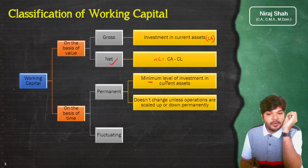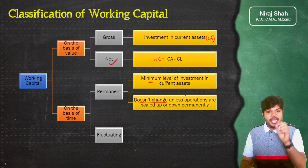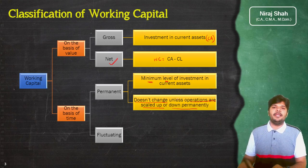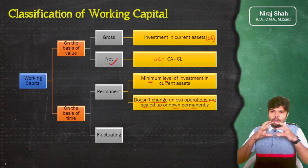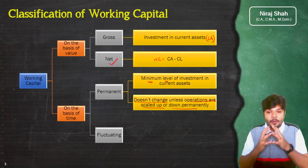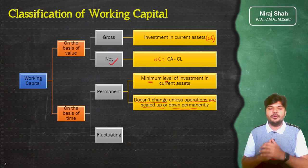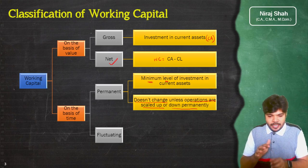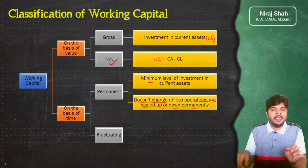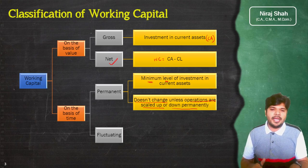Permanent working capital change नहीं होती — permanent working capital doesn't change unless operations of the business are scaled up or scaled down permanently। अगर अचानक business के operations बहुत ज्यादा scale up हो जाएं तो permanent working capital बढ़ सकती है, और permanently down हो जाएं तो कम भी हो सकती है। जो working capital कभी change नहीं होती unless कोई big event न बन जाए, उसे business में permanent या constant working capital कहते हैं।